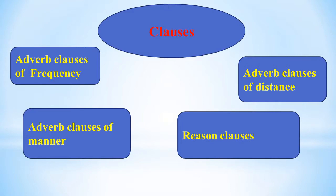In informal spoken English, people often use 'like' in place of 'as if' and 'as though,' but 'like' is not correct in formal written English. Use only 'as if' or 'as though' in your writing. Formal: 'It looks as if it is going to rain.' Informal: 'It looks like it is going to rain.' For example: 'John acts as if he were the Prince of Wales' (formal) versus 'John acts like he is the Prince of Wales' (informal).